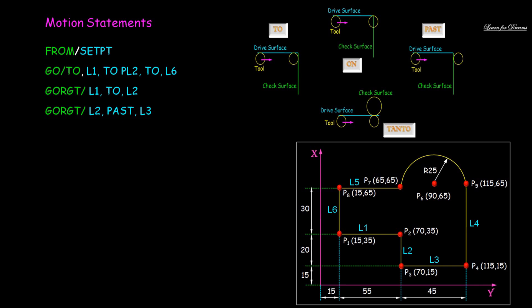Now from point 3 to point 4, GO LEFT slash L3 PAST L4. Again we have used PAST.